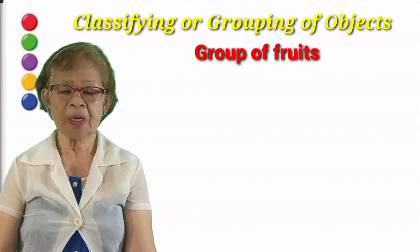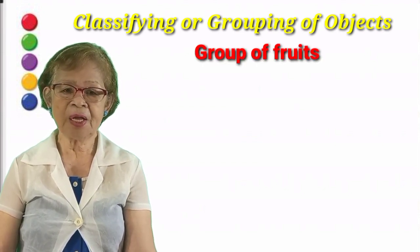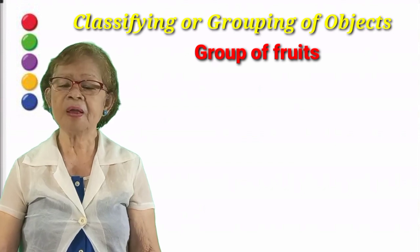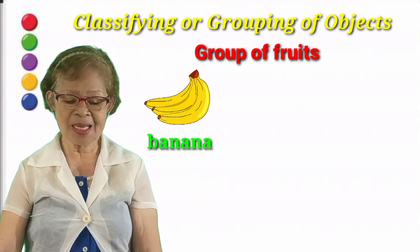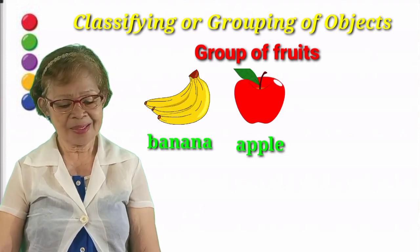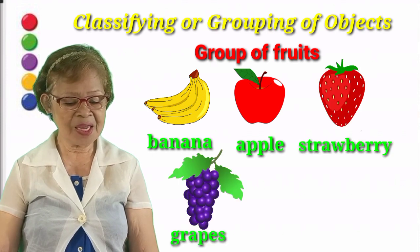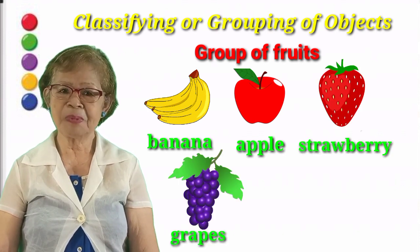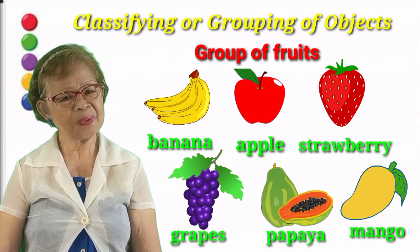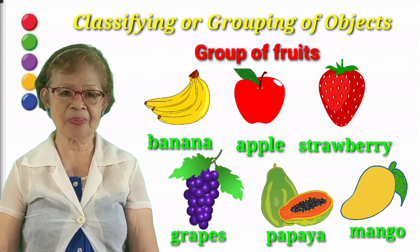First, we are going to group the group of fruits. Now we are going to have banana, apple, strawberry, grapes, papaya, and mango. So those are our group of fruits.